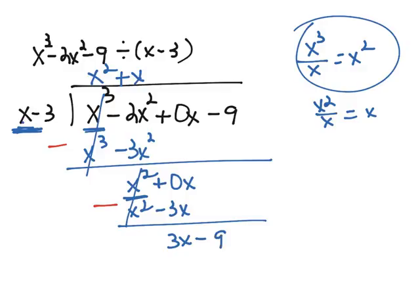Bring down the -9 and start the process over. x divides into 3x, 3 times. 3 times x is 3x. 3 times -3 is -9. Subtract, and we have a remainder of 0.